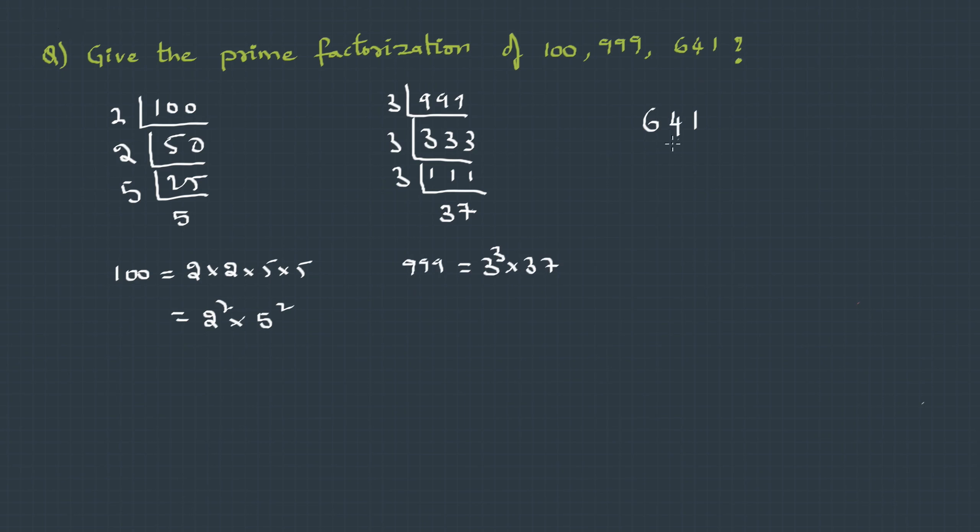Now how about 641? When you search for the prime numbers, you will see that nothing can divide this because this itself is actually a prime number. So 641 can be written as 1 × 641. There will be only two factors, that is one and itself.